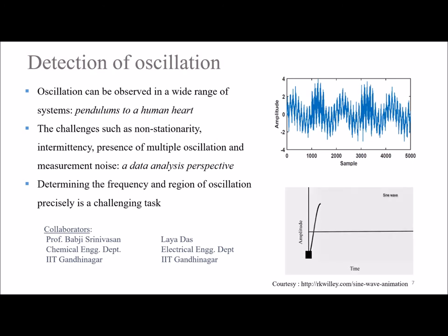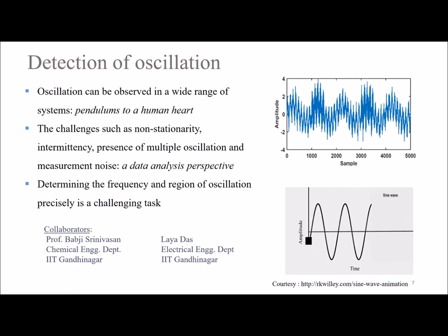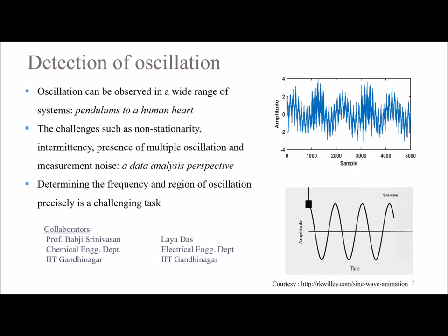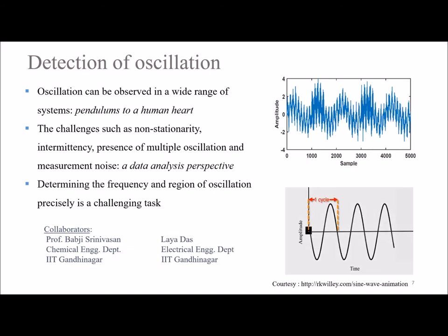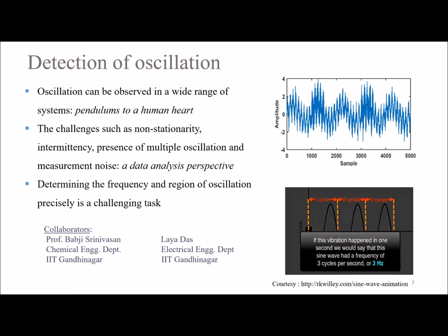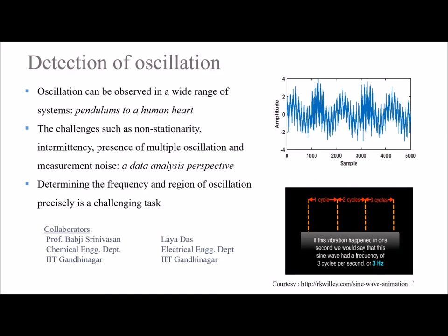Large amounts of data from different domains are analyzed here. This can be done by first finding the dominant frequencies and localizing the region of oscillation for the identified dominant frequencies. Determining the frequency and region of oscillation precisely is a challenging task, and we are working towards identifying a robust method for the same.